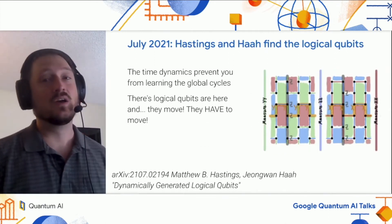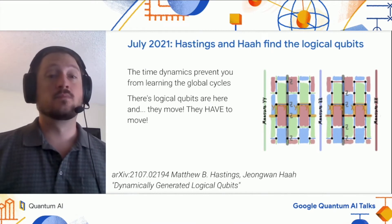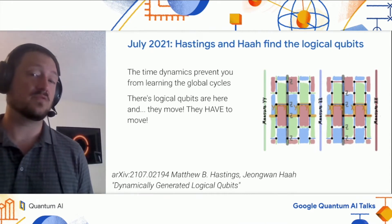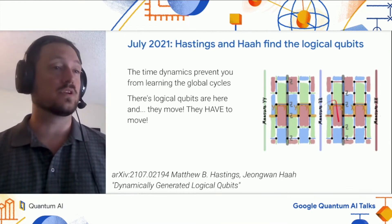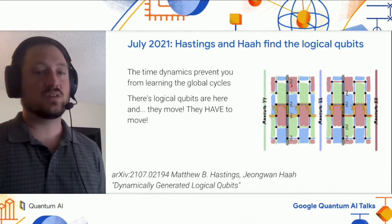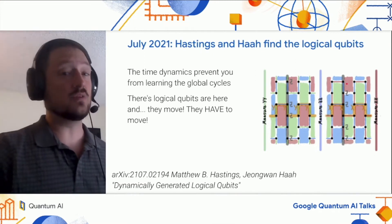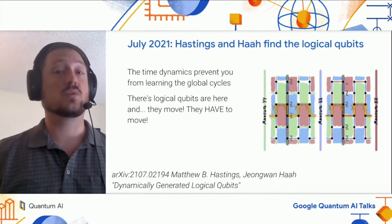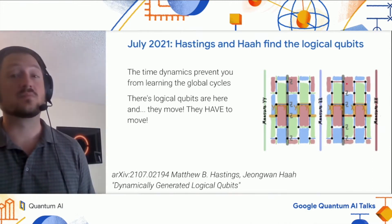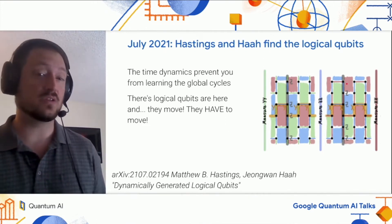The ones who realized that and went looking and found the logical qubits were Hastings and Haah. They did this almost exactly one year ago. What's particularly interesting about the observables they found is that they don't sit still. Before and after the layer of ZZ measurements, the vertical observable is supported by different data qubits. This is unavoidable in the system — we have to keep moving the observables, because otherwise they'll be destroyed by the next layer of measurements. This is part of why people didn't realize there are logical qubits in the system for such a long time. It's unusual for observables to have to move like this.